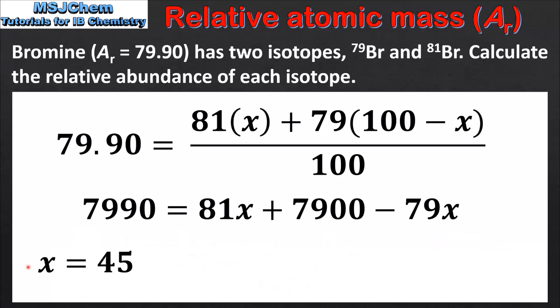And this gives a value of x of 45. So the isotope bromine 81 has a relative abundance of 45% and the isotope bromine 79 has a relative abundance of 55%.